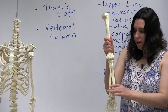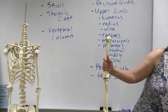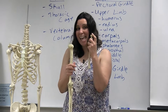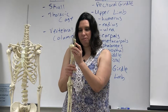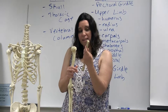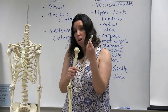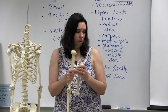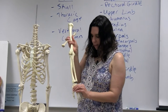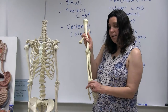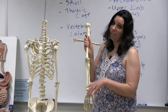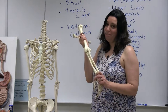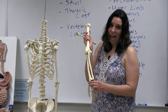The bone of the forearm on the lateral side is the radius, which is very distinguishable by having a flat head. There's also a process called the radial tuberosity, where a major muscle of your arm — the biceps brachii — actually attaches. Looking further down at the hand, we have the carpals. There are eight of these and they all have individual names, but fortunately you just need to recognize them as the carpals.